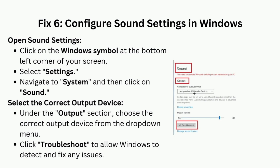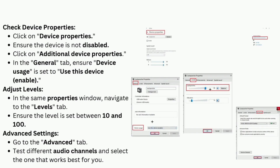Fix 6: Configure sound settings in Windows. Open Sound Settings by clicking the Windows symbol at the bottom left corner of your screen, select Settings, go to System, and then click on Sound. Select the correct output device under the Output section from the drop-down menu, then click Troubleshoot to allow Windows to detect and fix any issues.